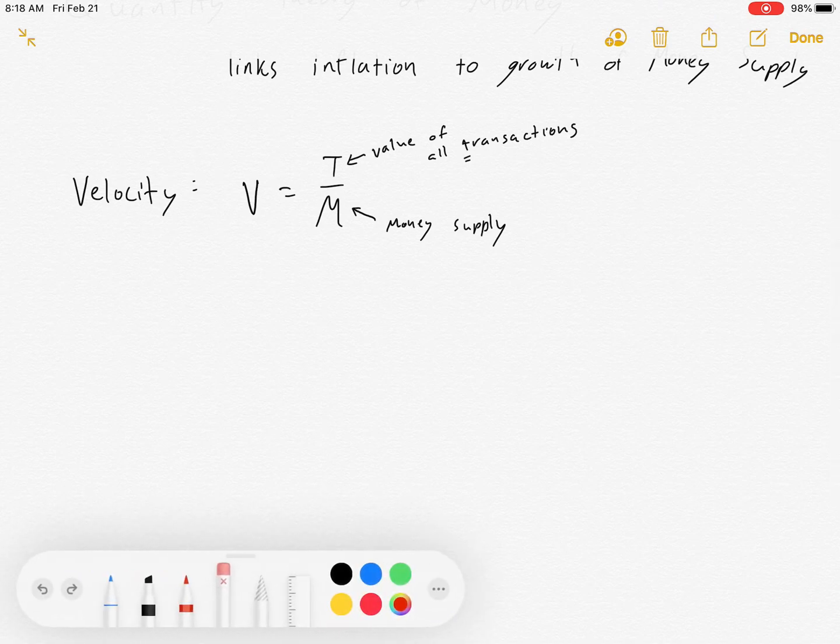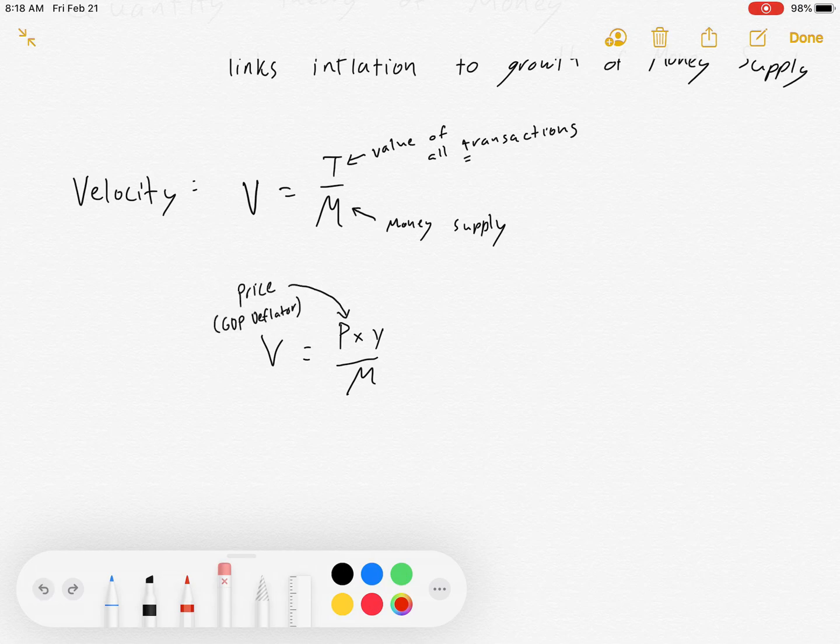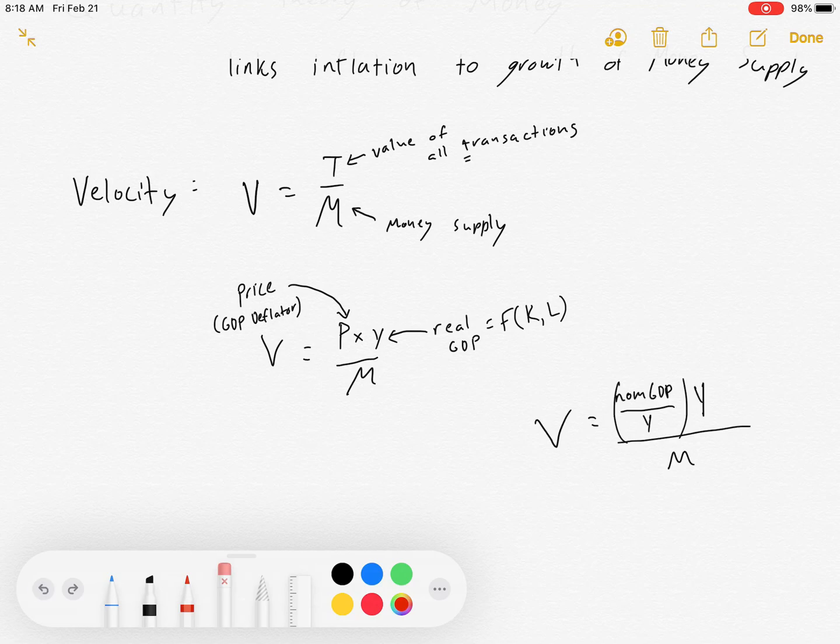Now I can rewrite this as V equals P times Y over M, where P is the GDP deflator or aggregate price level. Remember that the GDP deflator is nominal GDP over real GDP. Y is real GDP, so F of KL, and M is still money supply.